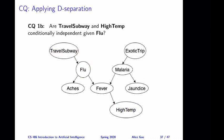Question 1b. Consider the same two variables, travel_subway and high temperature, except that in this case we observe flu. So given flu, are travel_subway and high temperature independent or not? Think about this yourself, and then keep watching for the answer. The correct answer is that these two variables are conditionally independent given flu.